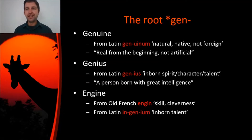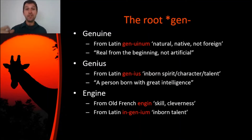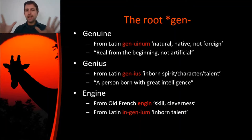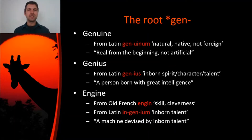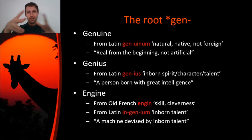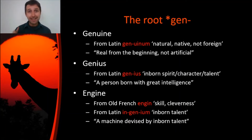Originally, inganium was just inborn talent. In French, it came to mean talent in the sense of skill or cleverness. And then later on, it came to refer to something that could be invented by means of somebody's inborn talent. So an engine originally just meant a machine or device that it took somebody really smart to figure out how to make. It isn't just something that anybody could have invented — it is a device of ingeniousness. And that's where we get our word engine, to refer to something that is really difficult to invent, but somebody smart did, and that's why we call it that.